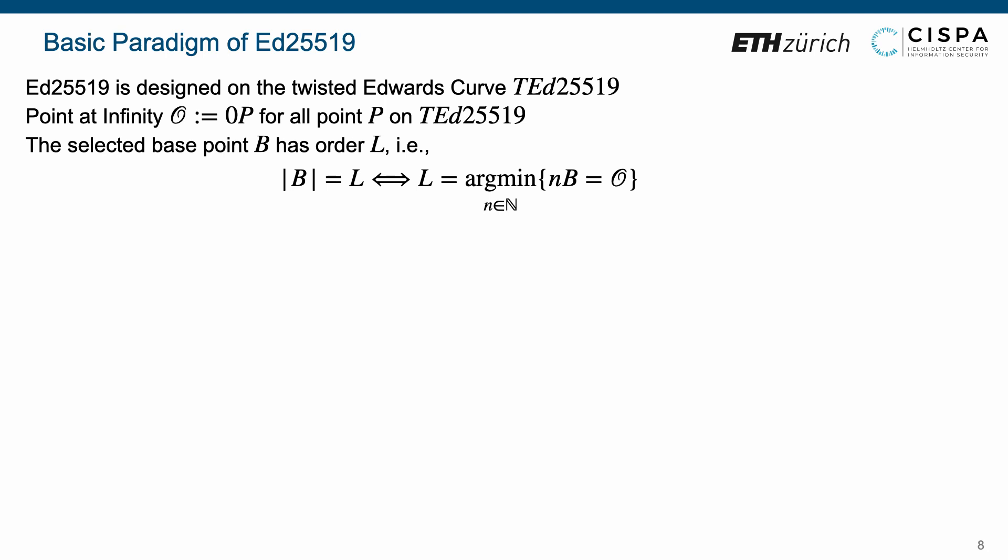Regarding this curve, there are two important points. The one is the point at infinity O, which equals zero times P for all points P on TED25519. The other is the selected base point B with order L.